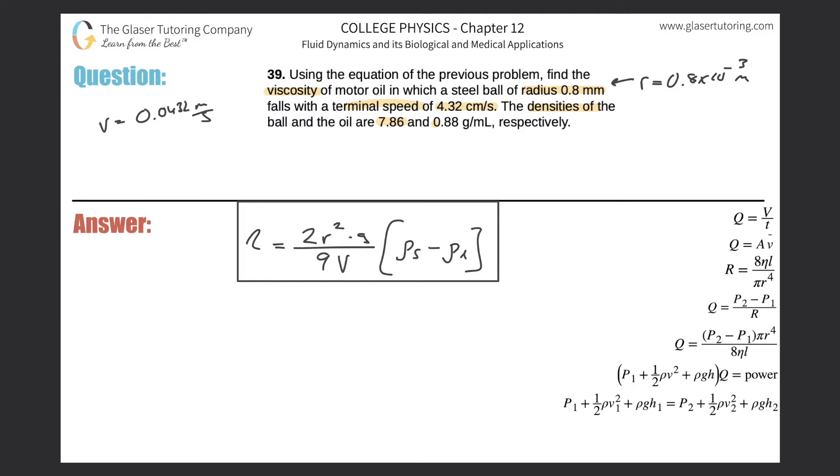And it now tells us the densities, and they give us the densities in grams per milliliter, but we need them in kilogram per cubic meter. So the relationship is that you would take these values in grams per milliliter and multiply it by 1,000. So it'd be 7.86 times 10 raised to the 3.